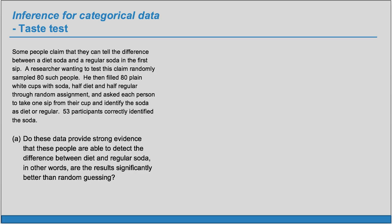Part A. Do these data provide strong evidence that these people are able to detect the difference between diet and regular soda? In other words, are the results significantly better than random guessing? When you see the word significantly better, that indicates that we're probably going to be carrying out a test of significance or a test of hypothesis.